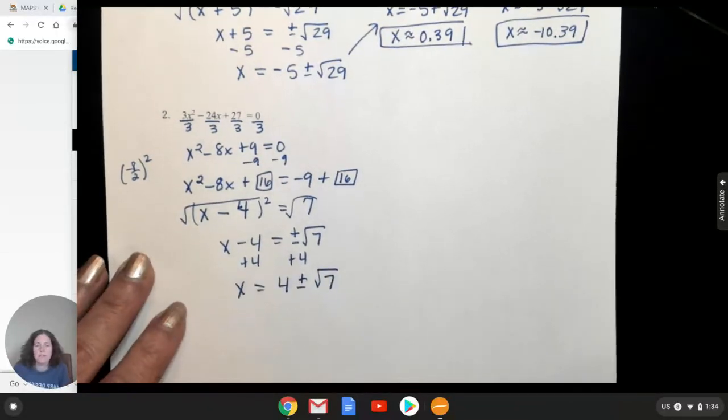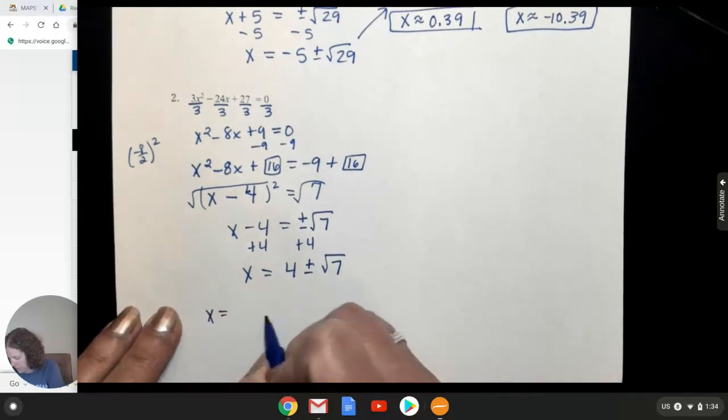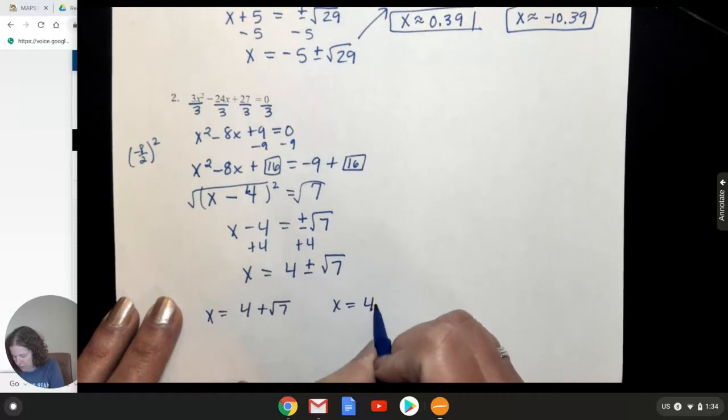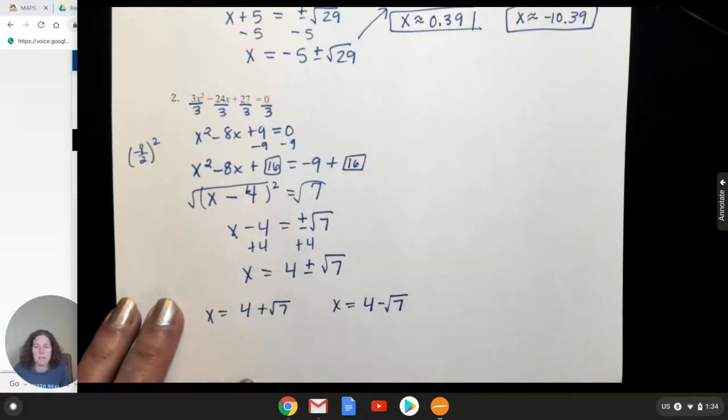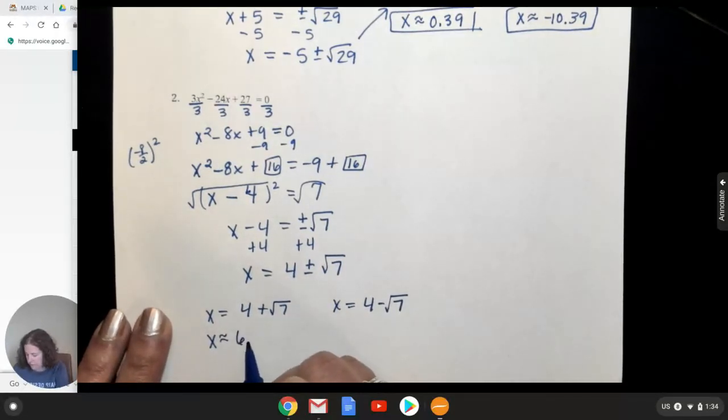So I've got 4 plus or minus the square root of 7. Okay, so now I'm going to do this problem with a plus and do this problem with the minus. So we get my two answers. These are going to be approximates. So if I do 4 plus the square root of 7, I get about 6.65. And then 4 minus, I get about 1.35.